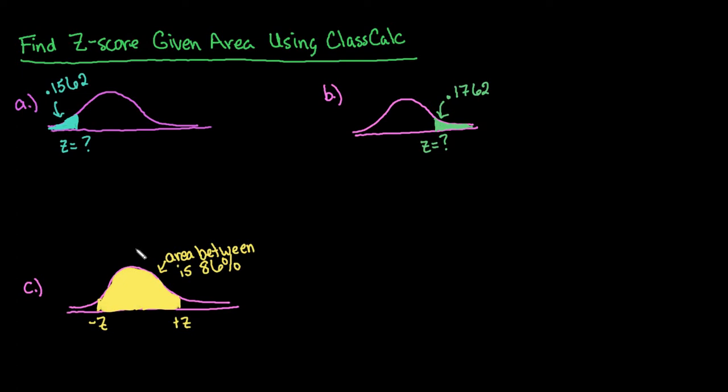Hi, for this video what I want to do is show you how to find a z-score given the area using a free online graphing calculator called ClassCalc. The calculator can be found at ClassCalc.com and it is totally free. You can also download it onto your phone.